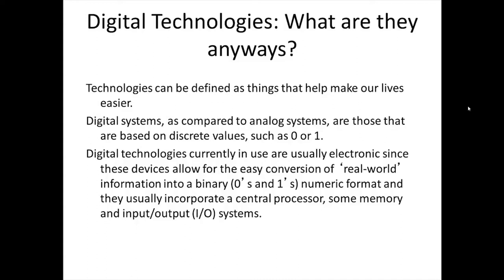Narrowing the definition still allows for a wide variety of devices and ideas. Remember that things that make our lives easier do not have to be physical in nature, so everything from Socratic teaching methods to textbooks to school buildings to chalk to computers and graphing calculators are all technologies — only a few are digital, though. Digital systems, as compared to analog systems, are those based on discrete values such as 0 or 1. As an example, think about a digital clock which can only display hours and minutes in discrete numbers such as 9:35.